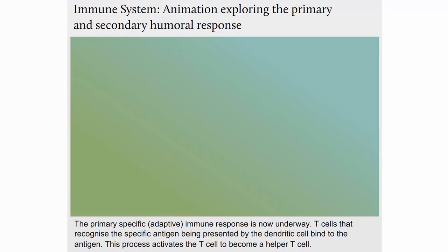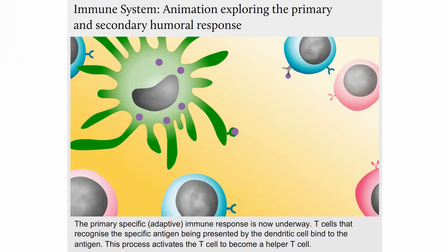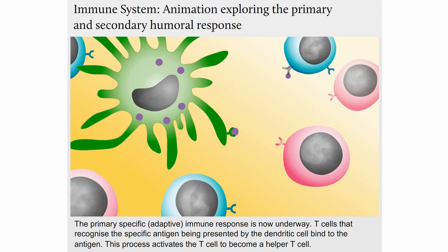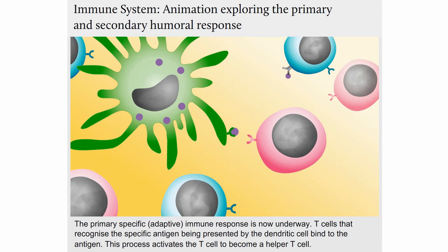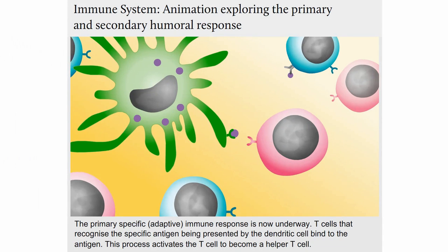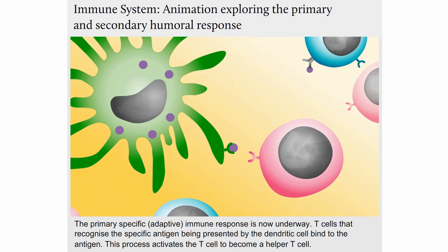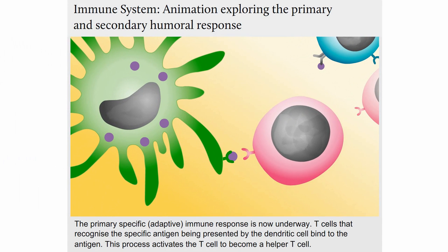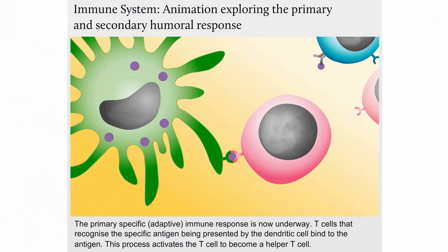The primary specific, adaptive immune response is now underway. T-cells that recognise the specific antigen being presented by the dendritic cell bind to the antigen. This process activates the T-cell to become a helper T-cell.